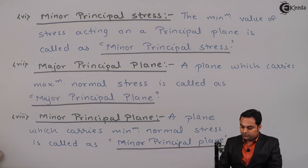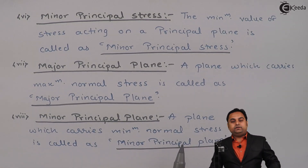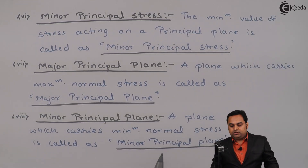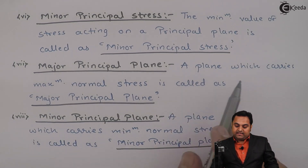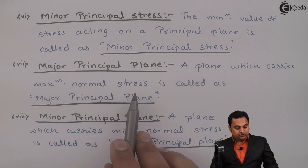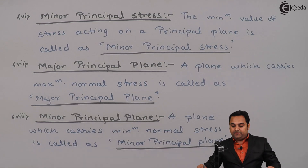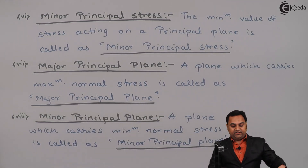Next, minor principal plane. A plane which carries the minimum normal stress is called the minor principal plane. The plane which carries the maximum normal stress is called the major principal plane.